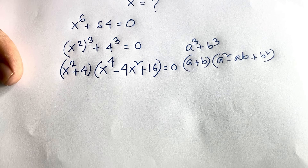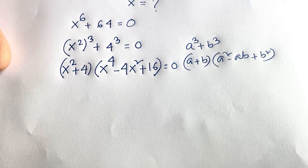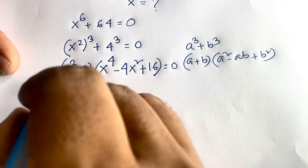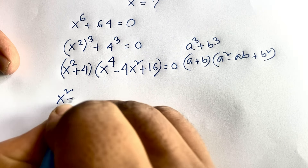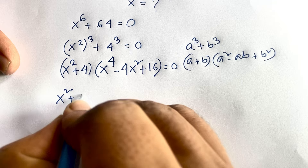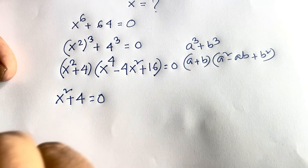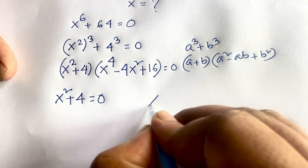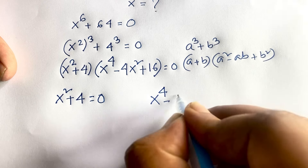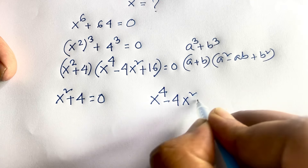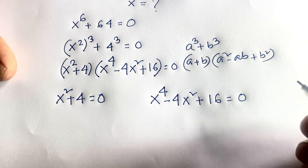From this factored expression we get two equations. The first is x squared plus 4 equals 0. The second is x to the power 4 minus 4x squared plus 16 equals 0.